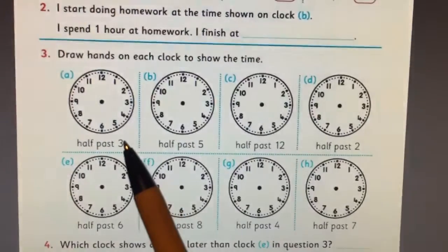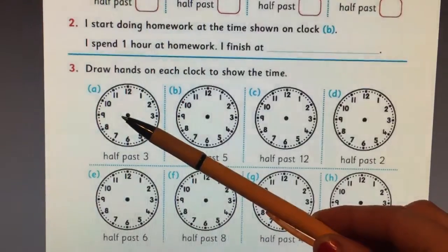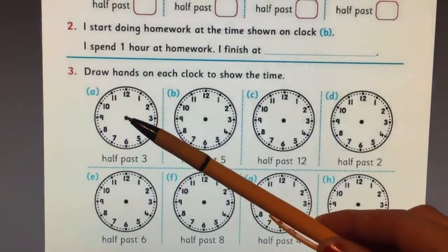If it was me, I would use a ruler to find out where the halfway point between the three and four is and draw the small hand there.